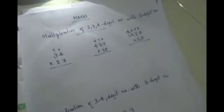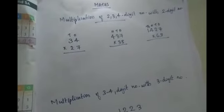Hello dear students, so in today's class we are going to learn the multiplication of 2, 3 and 4 digit numbers with 2 digit numbers. So first of all, we will multiply the 2 digit number by a 2 digit number.